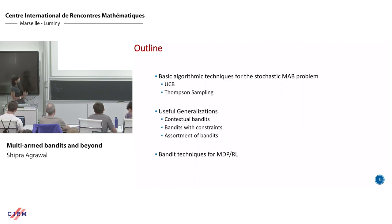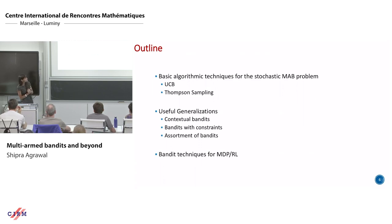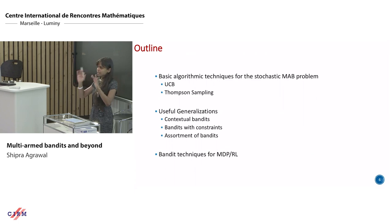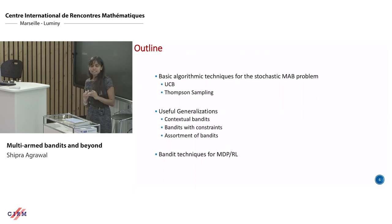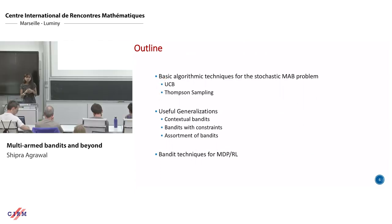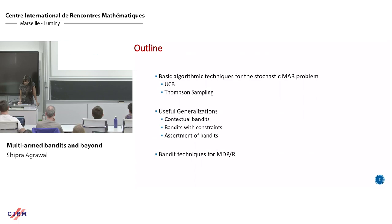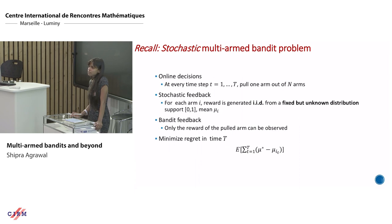Here is the summary of the rest of the tutorial. Today I'm covering two basic algorithmic techniques for solving the basic MAB problem: n arms, T rounds, fixed unknown distributions, IID rewards, and only observing the reward of the arm pulled. I'll discuss two algorithmic techniques for bounding regret in that setup and the corresponding proof techniques. Then we'll move on to generalizations that make this setup useful for real problems, and extend to reinforcement learning.